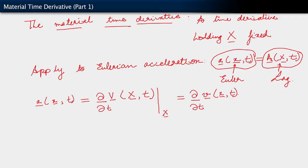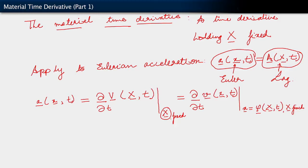We want to do this holding capital X fixed, recalling that little x here is phi of capital X and t. And it is that capital X that we want to hold fixed. So we annotate this further by saying capital X is fixed here. Once we recognize that and are disciplined about remembering what we're holding fixed, this is actually very straightforward — because what this simply means is that there are two sources or two origins for time dependence.